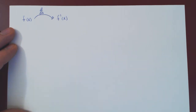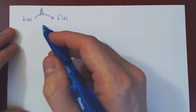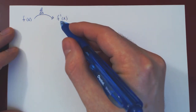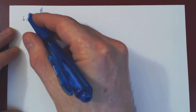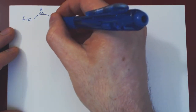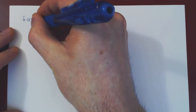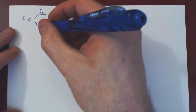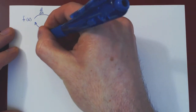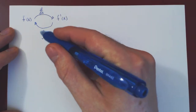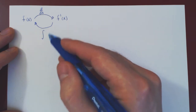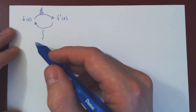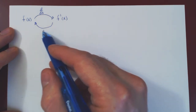In Integral Calculus, we do the same thing but backwards. We start with the derivative of a function, and we want to go back to the original function before it was differentiated. So integration is the opposite of differentiation. The symbol for integration is this long, stretched-out s.